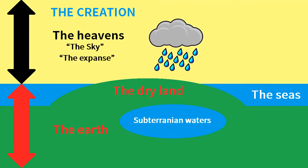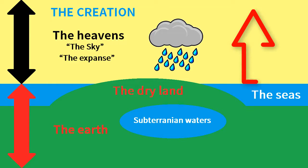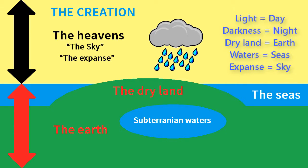The Bible never speaks of a solid dome in the sky. Rather, the expanse is the sky extending upwards from the surface of the earth. Thus Genesis defines its own words by ordinary terms applied to the visible world: light is day, darkness is night, dry land is earth, waters are seas, and expanse is the sky.